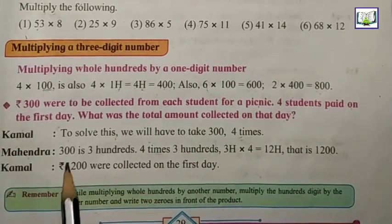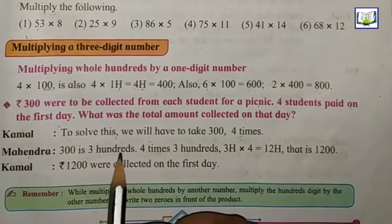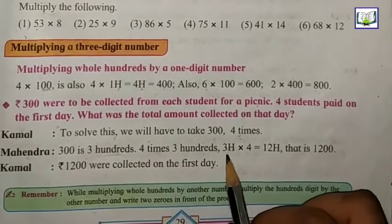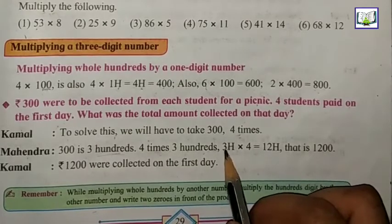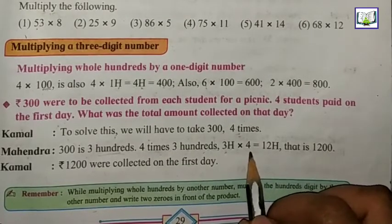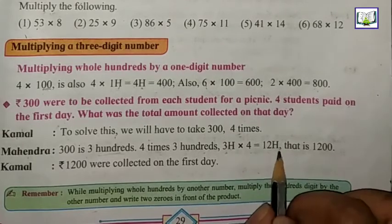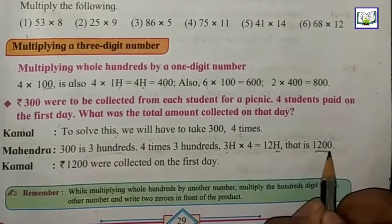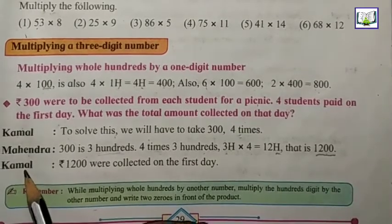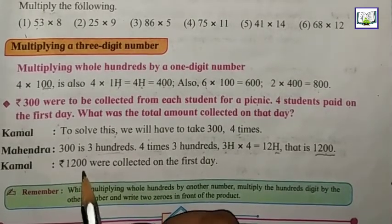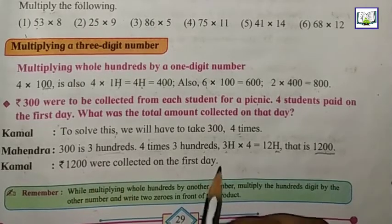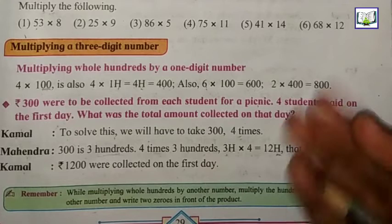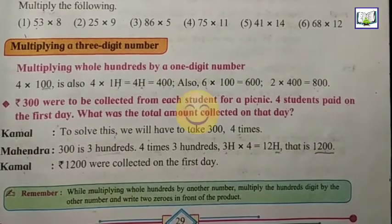Mahindra said 300 means 3H, four times, so we can directly use multiplication. 300 means 3H into 4, so 3 fours are 12H. And H means 2 zeros. So it will become 1200. Yes, 1200 were collected on the first day. Multiplication makes the number calculation easy. That's why we take the help of multiplication.